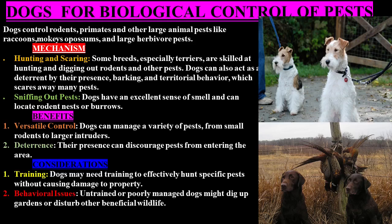Dogs have an excellent sense of smell and can locate rodent nests or burrows. Benefits: dogs can manage a variety of pests, from small rodents to larger intruders. Their presence can discourage pests from entering the area. Consideration: dogs may need training to effectively hunt specific pests without causing damage to property. Untrained or poorly managed dogs might dig up gardens or disturb other beneficial wildlife.